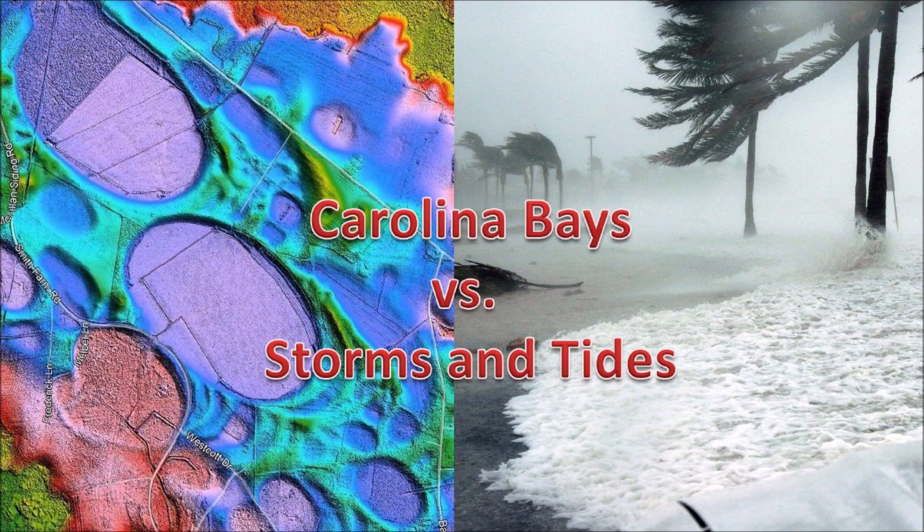Carolina Bays versus Storms and Tides. The Carolina Bays are the most prevalent geological structures of the Atlantic Coastal Plain, but they consist only of sand. They are fragile and easily eroded. This video uses LiDAR to examine the Atlantic coast of the United States to determine if any Carolina Bays can be found at elevations of less than 4 meters above sea level, which is approximately the level reached by storm surges and tidal flooding.